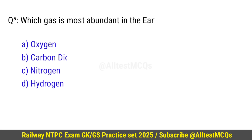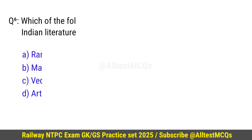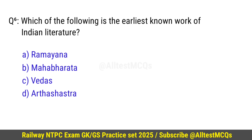Question number 5: Which gas is most abundant in the Earth's atmosphere? Correct option is C — Nitrogen. Question number 6: Which of the following is the earliest known work of Indian literature? Right option is C — Vedas.